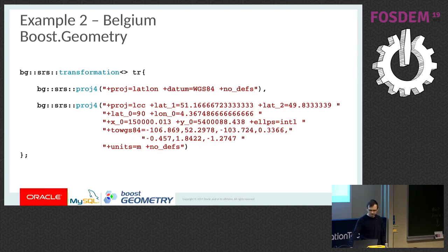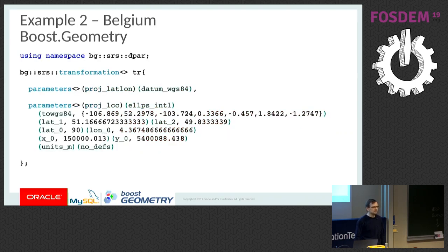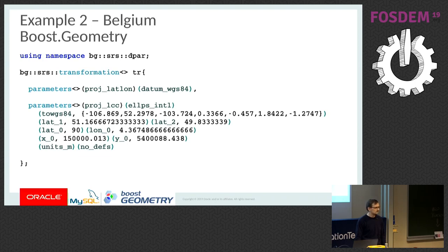But there is a better way, which looks very similar — the names of parameters are the same. However, the numbers are expressed directly in the code, which means they don't have to be parsed. Here you can see the two WGS84 parameters, which are parameters used in conversion between ellipsoids. I'm passing a C++11 initializer list as a range, but you can pass any range you like.